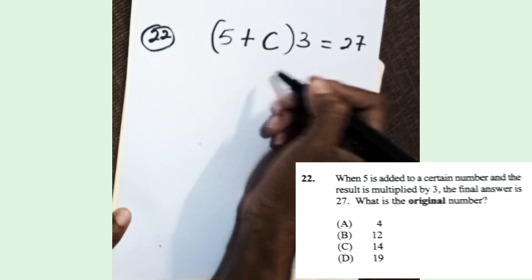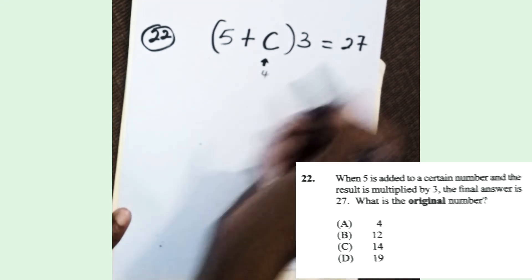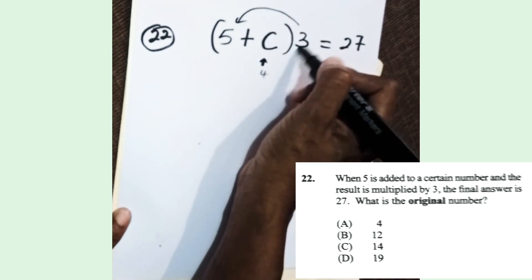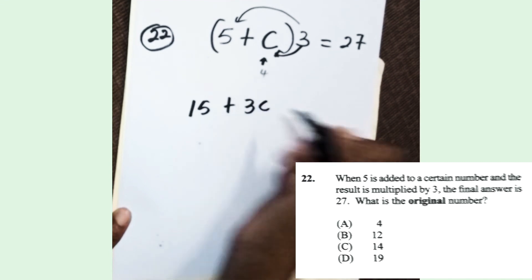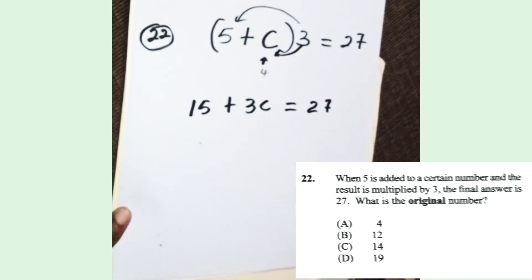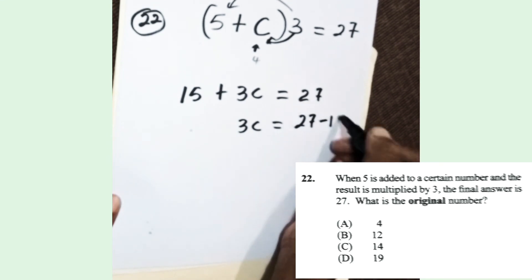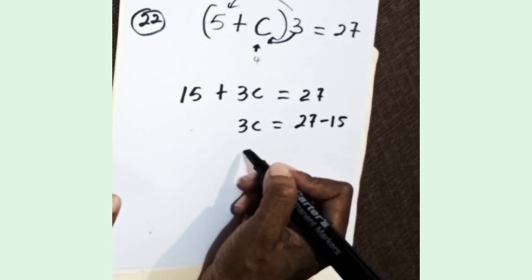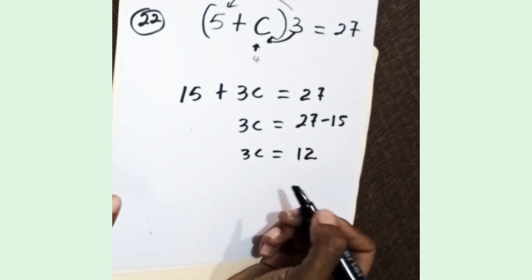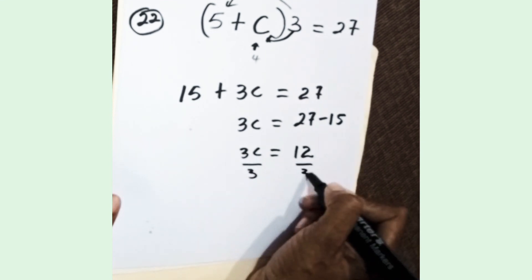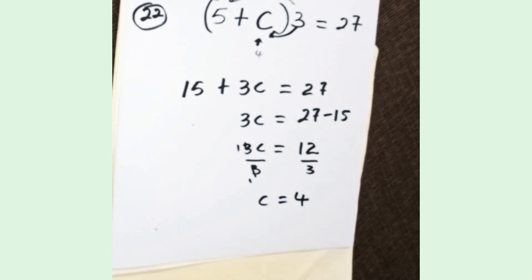All you need to ask yourself is: 5 plus what number times 3 gives you 27? Start to look at what numbers you multiply by 3 to get 27—of course it would be 9, and 5 plus 4 is 9. But say you can't look at it and tell, well work it out. Use the distributive law: 3 times 5 is 15, plus 3 times C is 3C equals 27. Next, take the 15 from 27, so 3C equals 12.